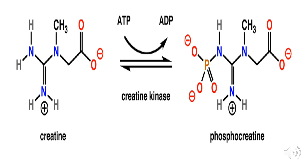Take a look at the chemical reaction catalyzed by creatine kinase. The substrates are creatine and ATP. Creatine kinase is a transferase enzyme that particularly transfers a phosphate group. One of the phosphate groups in ATP will be transferred to creatine, converting creatine into phosphocreatine while ATP becomes ADP.